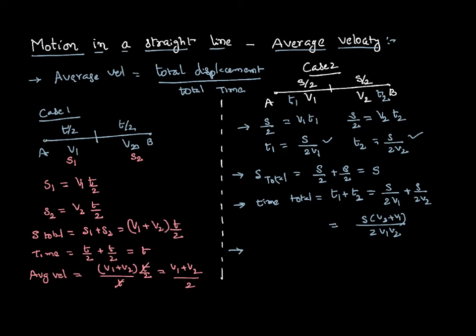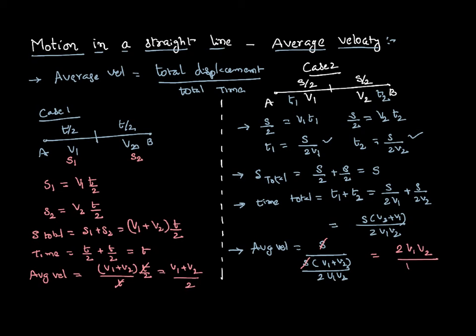Now I know the total displacement and total time, so I can calculate average velocity as total displacement divided by total time. Total displacement is S, and total time is S(V1+V2)/(2V1V2). The S cancels, and we get average velocity equals 2V1V2 divided by (V1 + V2). This way, average velocity varies depending on the scenario, but the basic concept is simple: average velocity is total displacement divided by total time.